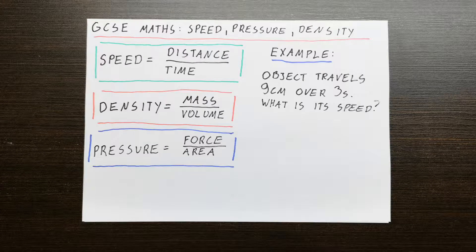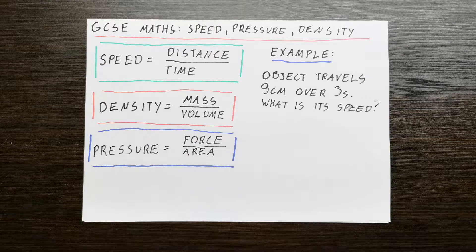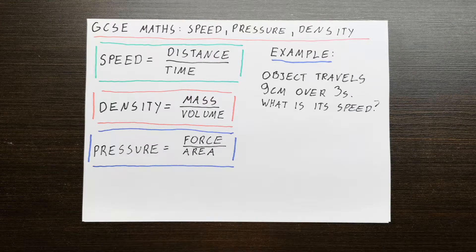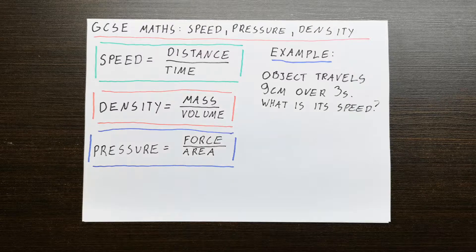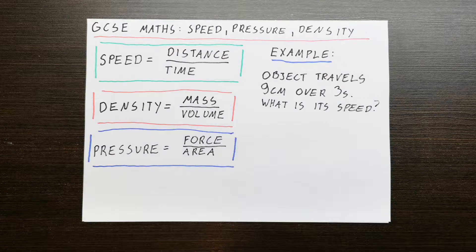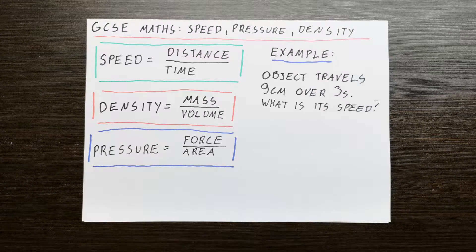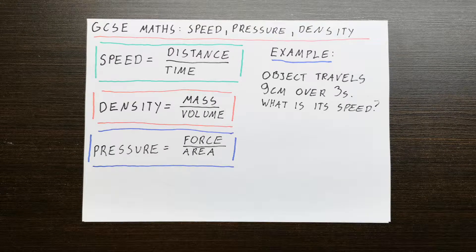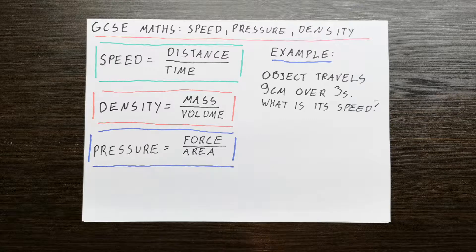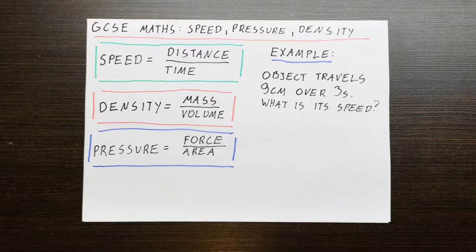Density is a measure of how much mass we have in a certain volume. For example, lead is very dense because very little of lead is very heavy. That's the age-old question of what's heavier, one kilogram of feathers or one kilogram of lead.